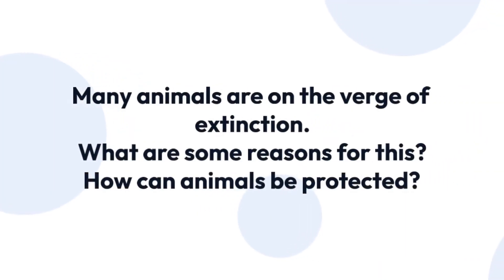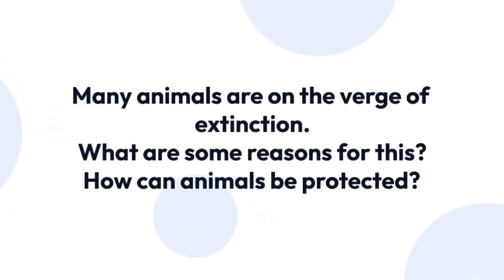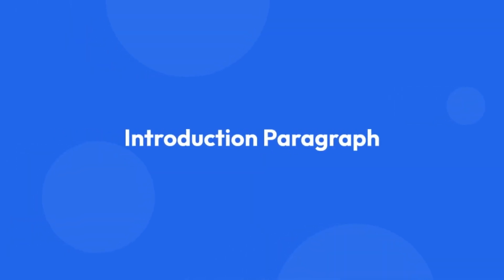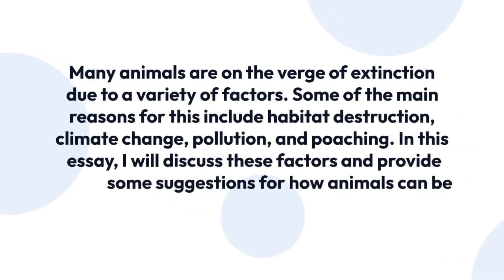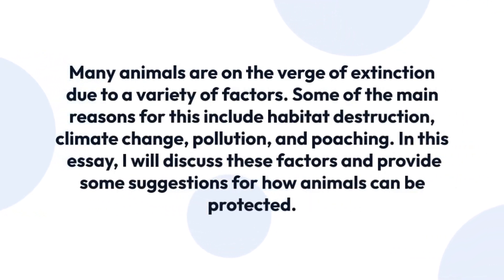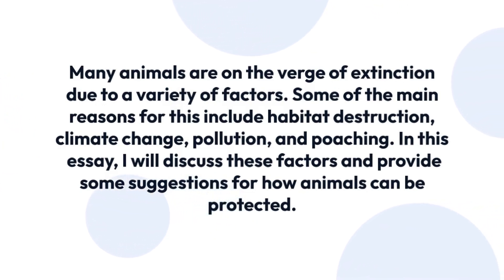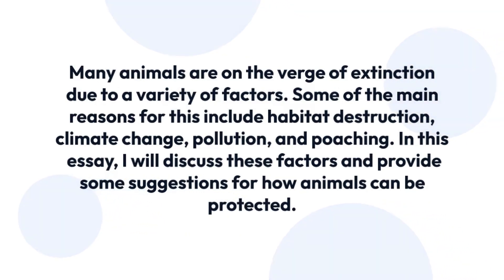Many animals are on the verge of extinction. What are some reasons for this, and how can animals be protected? Many animals are on the verge of extinction due to a variety of factors. Some of the main reasons for this include habitat destruction, climate change, pollution, and poaching. In this essay, I will discuss these factors and provide some suggestions for how animals can be protected.